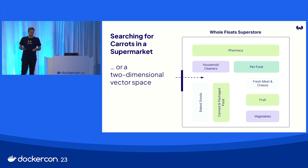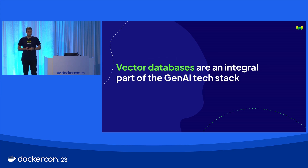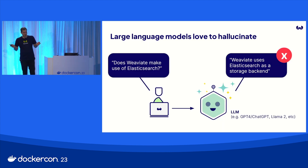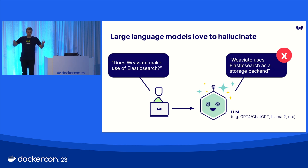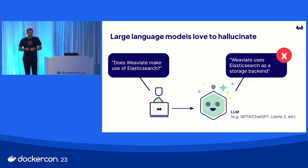The meaning in this case is the similarity in that two-dimensional space. In reality, that's a higher-dimensional space. But then the whole ChatGPT thing happened, and everything sort of changed even more. If you ask ChatGPT using GPT-3.5 right now, 'Does Weaviate make use of Elasticsearch?' it will actually say Weaviate uses Elasticsearch as a storage backend. The thing is, that's wrong. What the model did is it hallucinated — it gave this very confident answer, but that's the wrong answer.